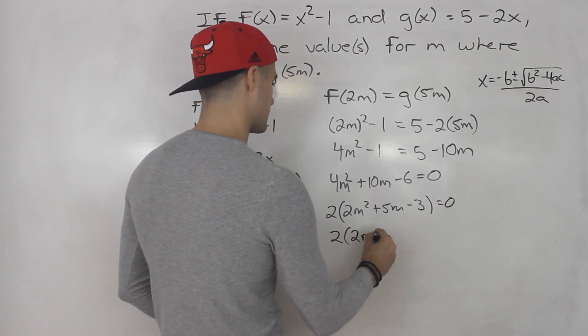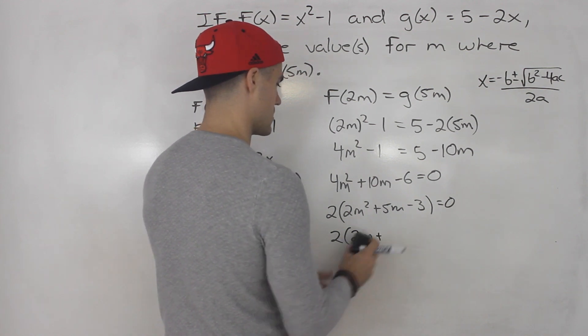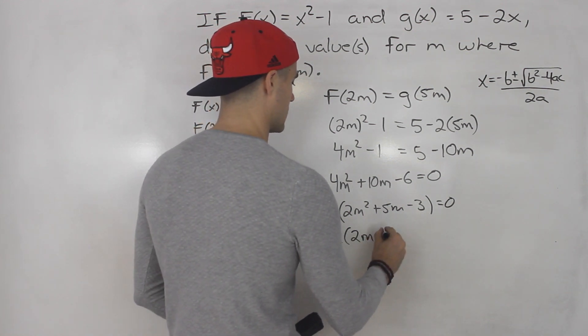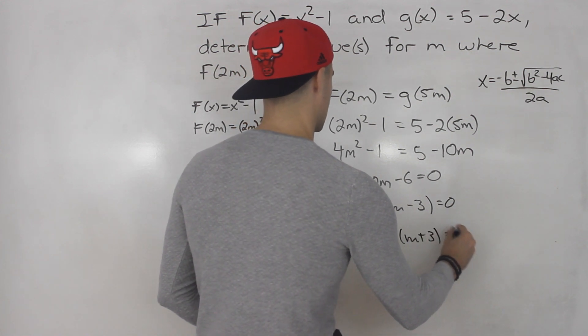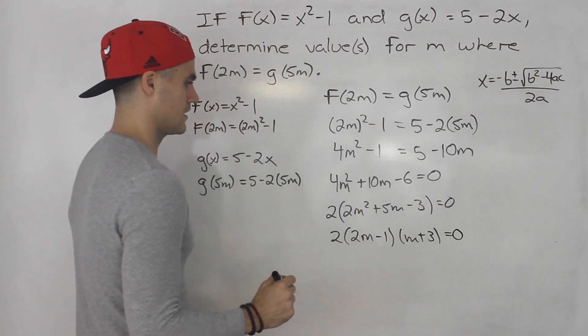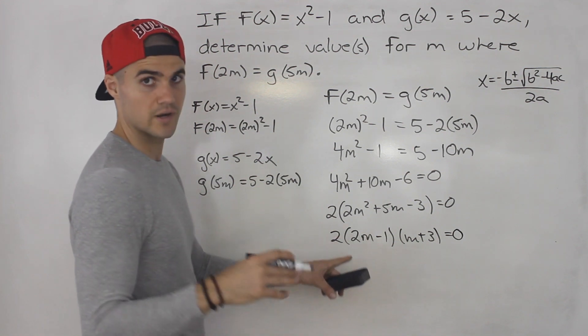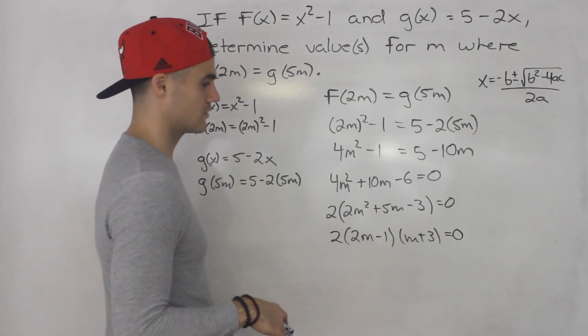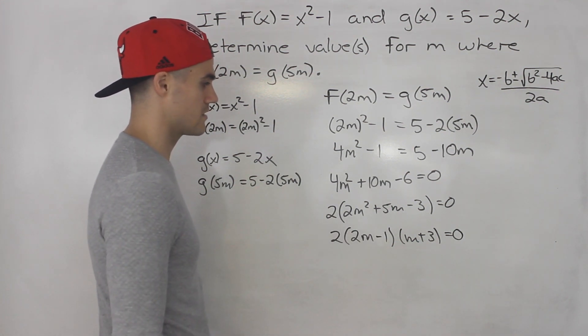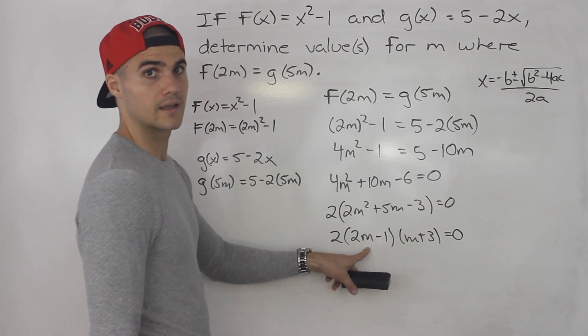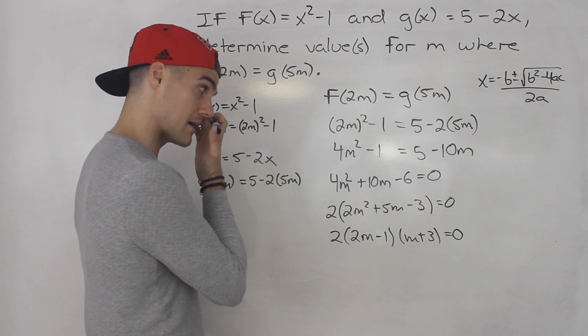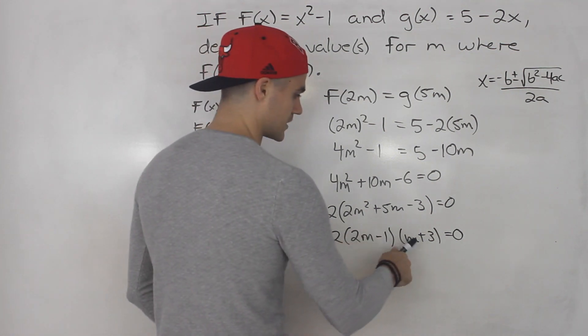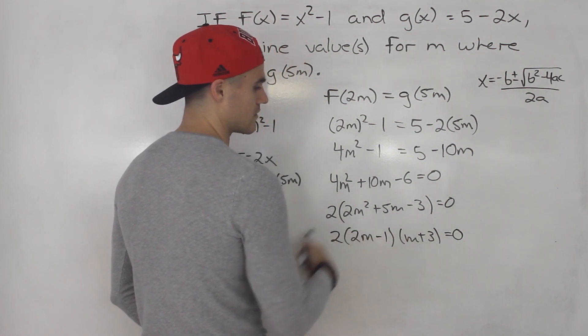This here, you can factor by decomposition. I think this factors into (2m - 1)(m + 3). I'm not going to go over the details right now of how to factor—you may have to review that. We'll be going over that in chapter 3 when dealing with quadratics. But yeah, this seems right because if I FOIL this out, I should get this answer.